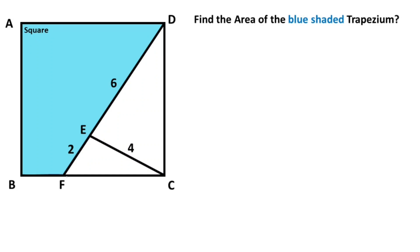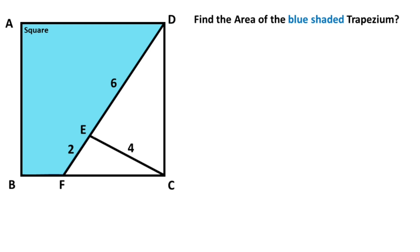In this video we have one square. Here is given two, here is given four, and this length is given six units. The question is: what is the area of the blue shaded trapezium? First of all, let's draw one perpendicular line like this.